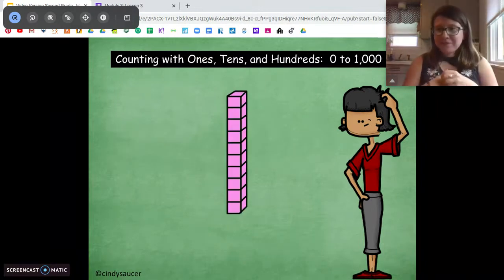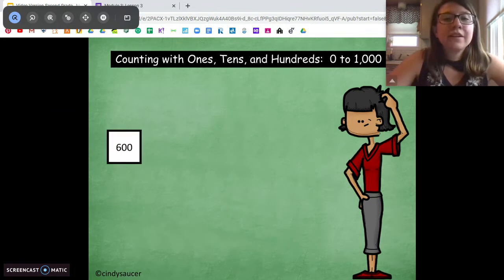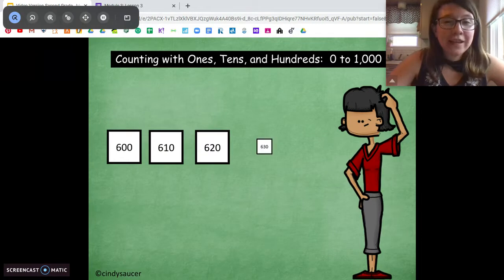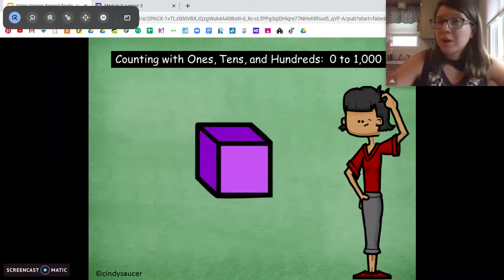Now what are we going to count by? Tens again. Very good. Starting at 600. 600, 610, 620, 630, 640. Pause.